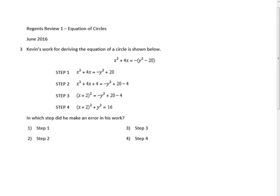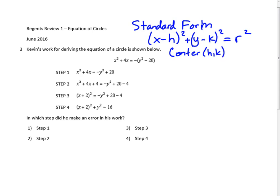The first thing we need to understand when we're thinking about circles is the standard form of the equation of a circle. That's (x - h)² + (y - k)² = r², where the center is the point (h, k) and r equals the radius.